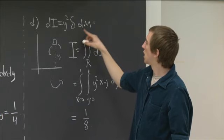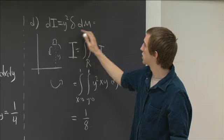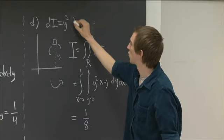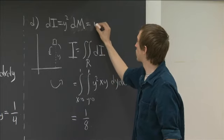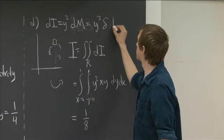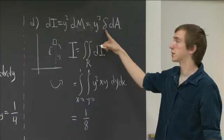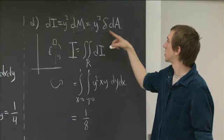Oh dear. This should have said y squared dM, and that's y squared delta dA. So I wrote the delta kind of implicitly, I wrote it twice. What we meant to say is dI is y squared delta dA.